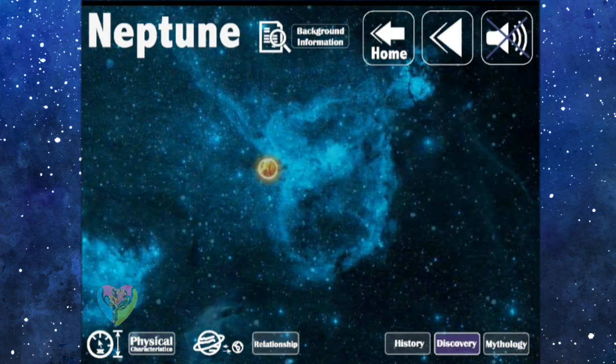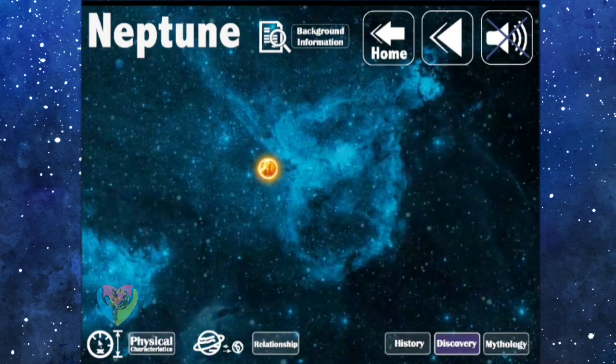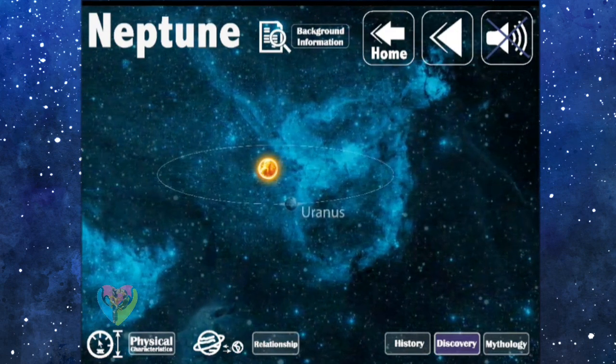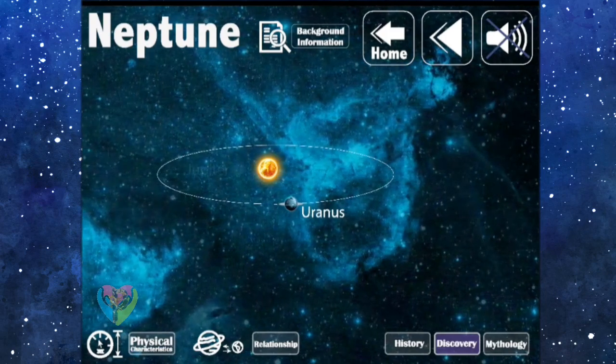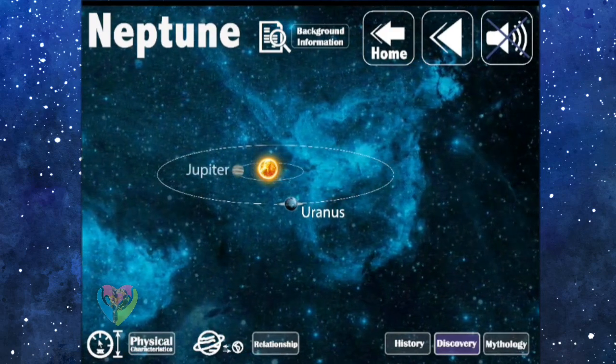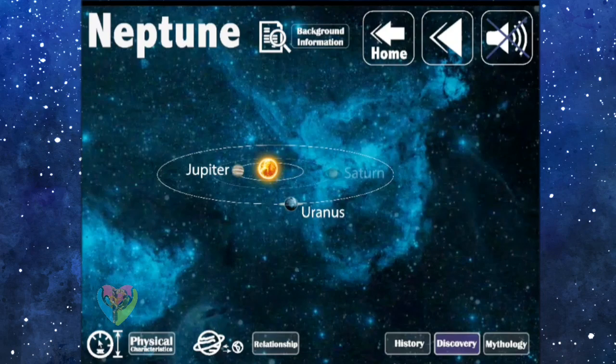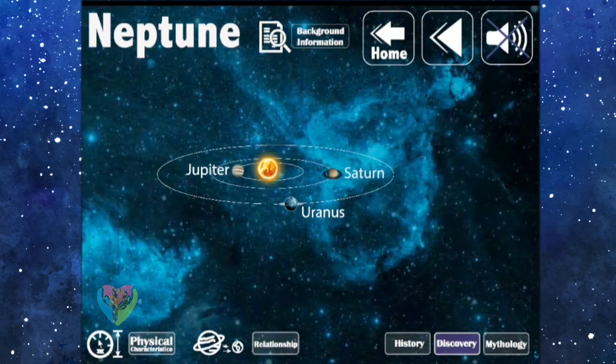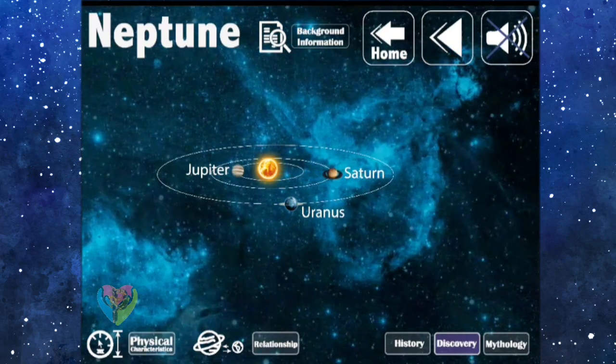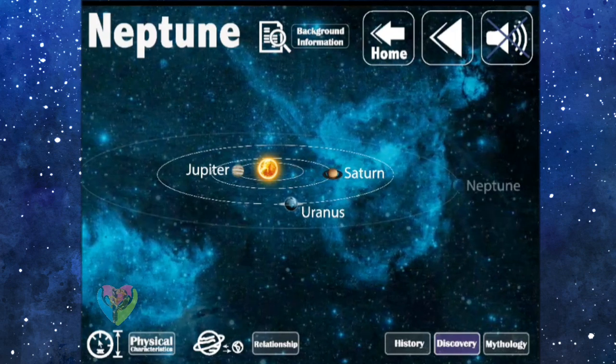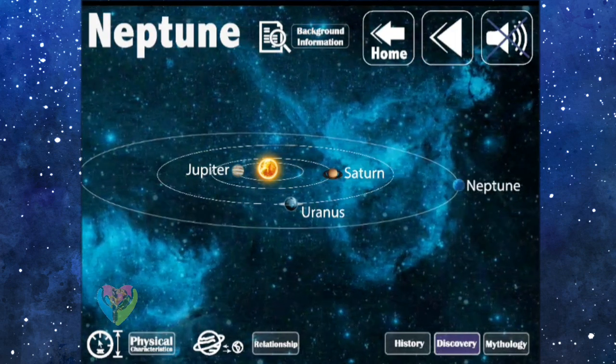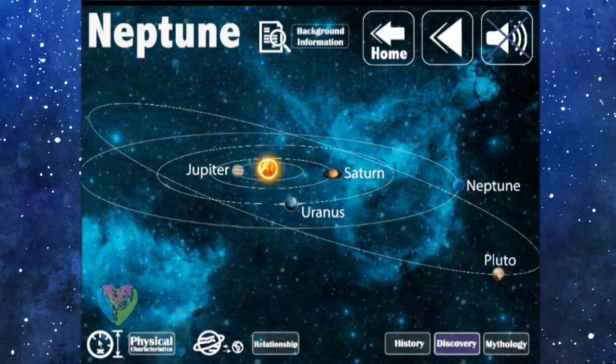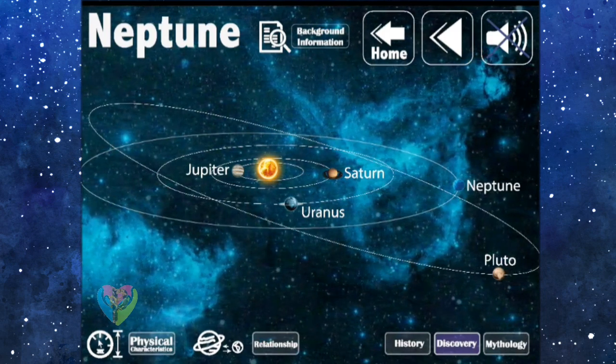Discovery: After Uranus was discovered in 1781, astronomers believed that there must be a planet that has a disturbing force towards the orbit of Uranus. They calculated the position of the planet in advance until 1846. The astronomers used the telescope and discovered Neptune at the position they pre-calculated.